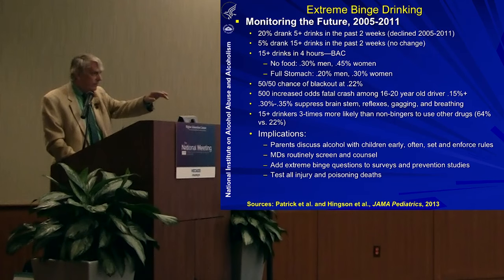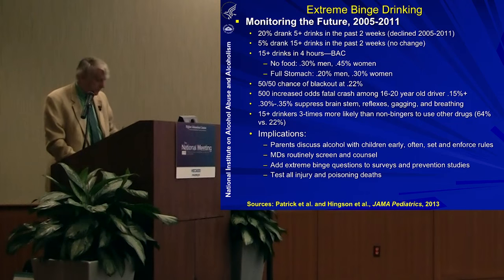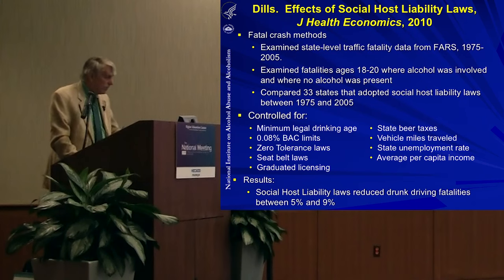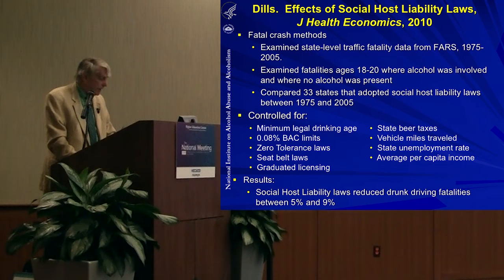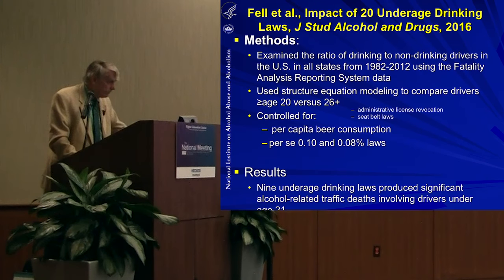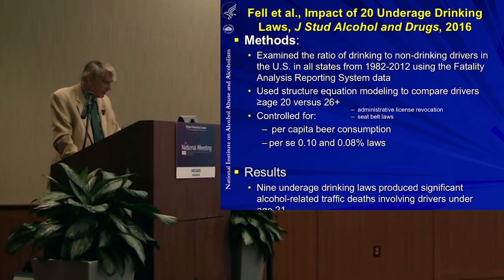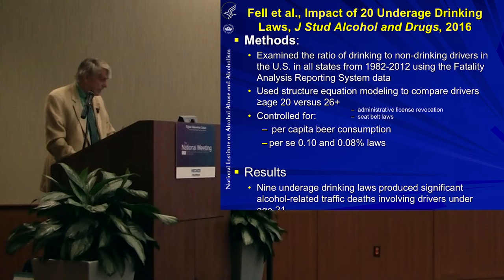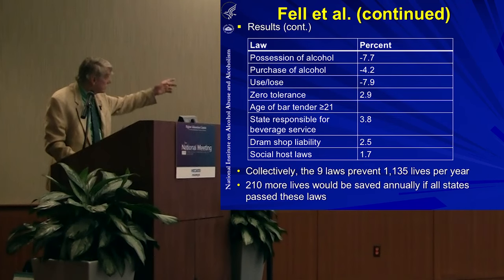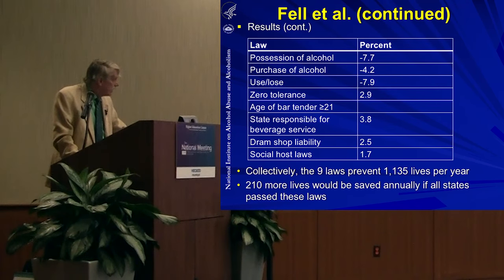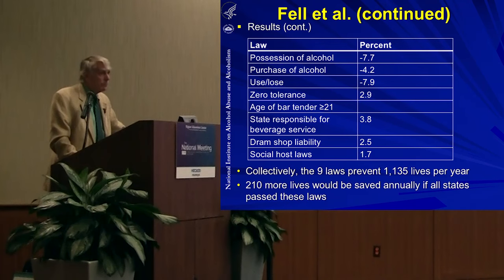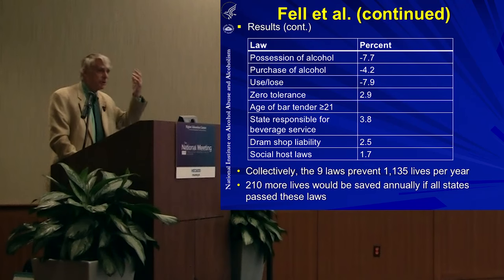Jim Fell published a study of 20 different underage drinking laws and found that nine of them produce significant reductions in alcohol-related traffic deaths involving drivers under 21. He said collectively, the nine laws prevent over a thousand deaths each year, but 210 more lives per year — about the number of people in this room — could be saved if every state adopted all those laws. But it's not enough to pass laws — a Washington D.C. study showed that young people given money to purchase alcohol succeeded 98 out of 100 times. Police and court enforcement must follow.